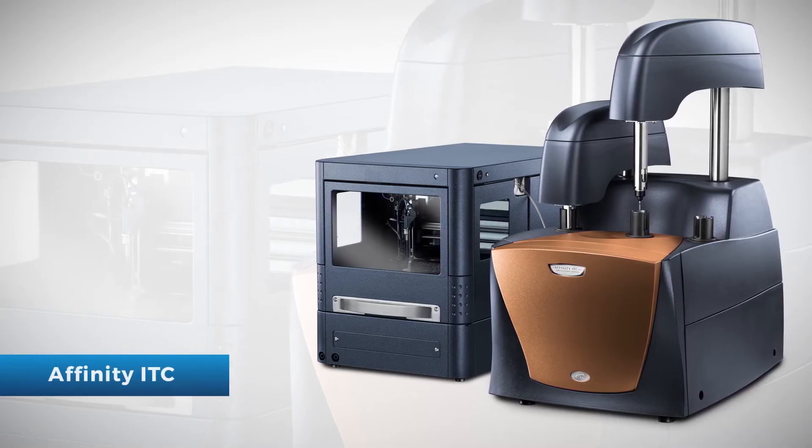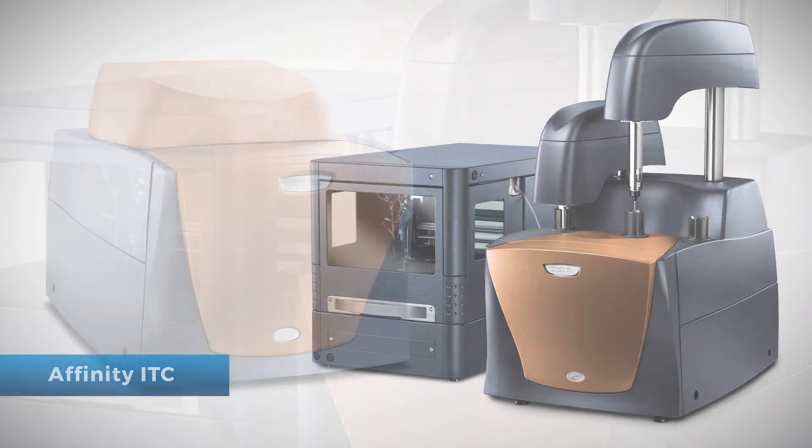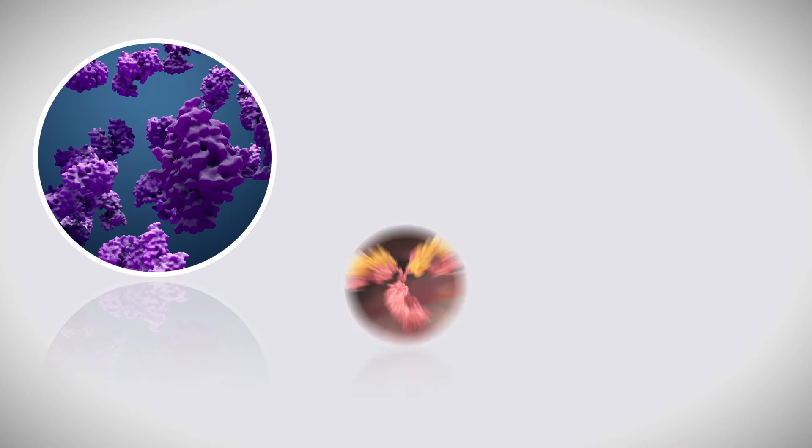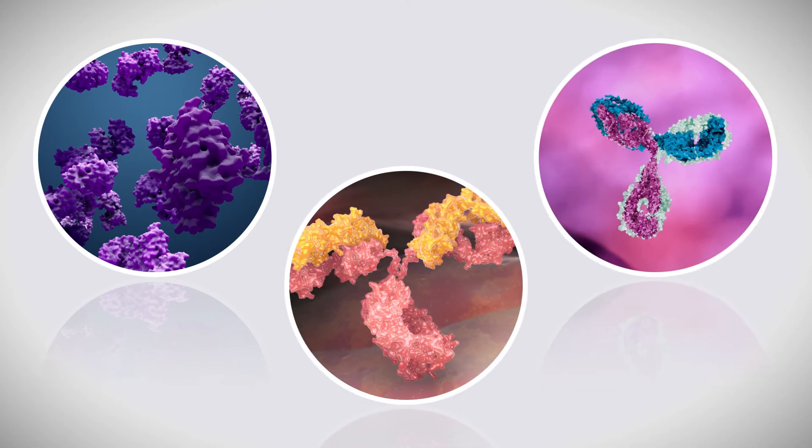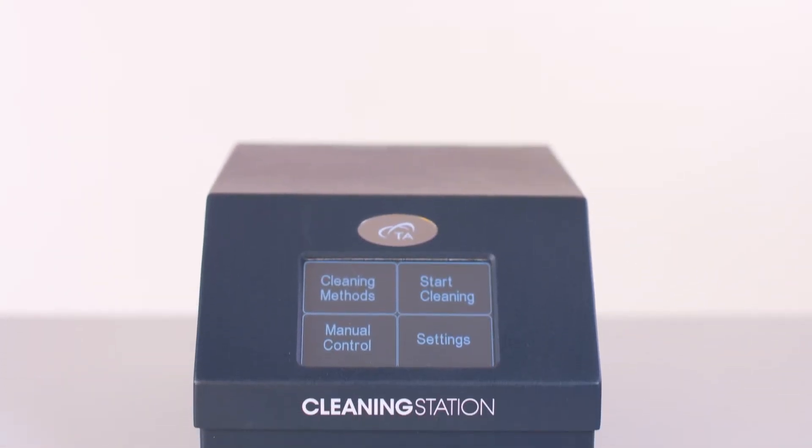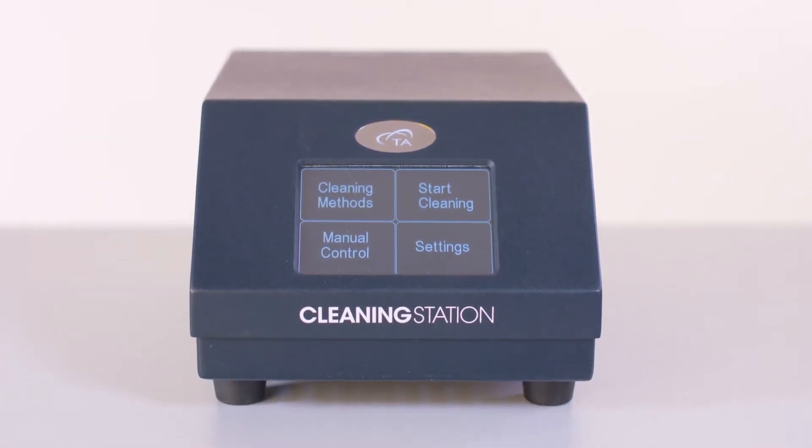The TA Instruments isothermal titration calorimeters and nano differential scanning calorimeters are commonly used to study proteins. Sometimes these proteins require the use of large volumes of water to properly clean the cells. In this Tech Tip, we will be using the automated cleaning station in manual mode with water to rinse the sample cells.